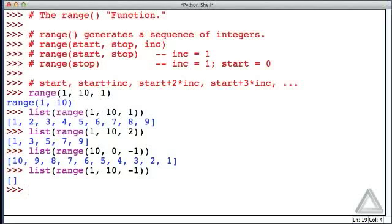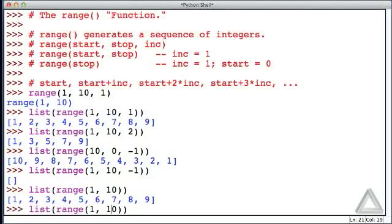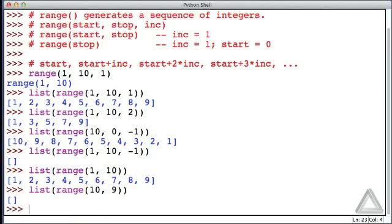If we call the range function with two arguments, the increment is assumed to be positive one. Let's recall that previous command and just eliminate the increment. Now it is plus one, and we get the sequence one through nine. If we have a start value that's greater than or equal to the stop value, then no integers are produced.